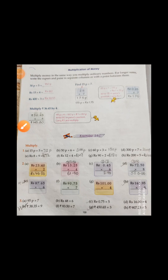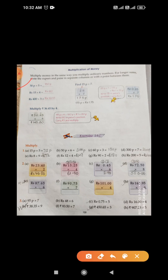Come to page number 120 — multiplication of money. You multiply money the same way you multiply ordinary numbers. For longer sums, write the rupees and paise in separate columns, or put a point between them. Example: 30 paisa into 5 — the answer is 150 paisa. Second example: rupees 15 into 4 — 15 fours are 60, so it becomes rupees 60. Third: 400 multiplied by 3 — three fours are 12, the answer is 1200 rupees.